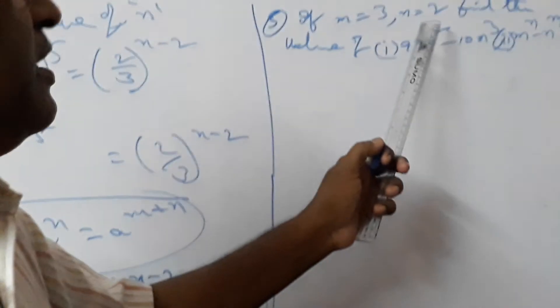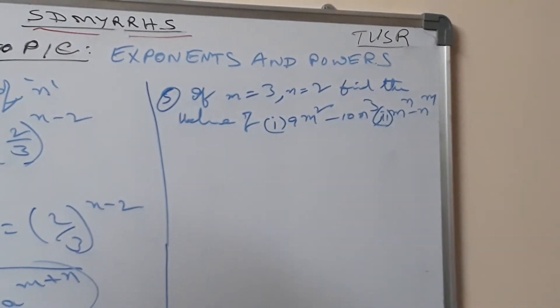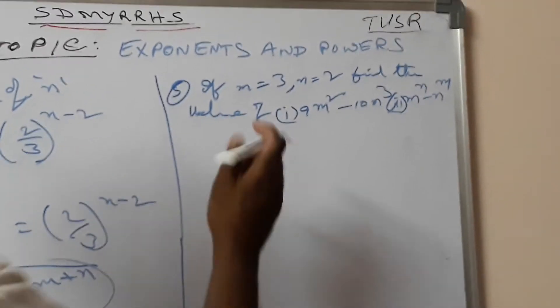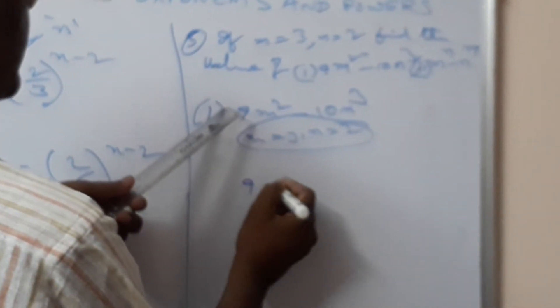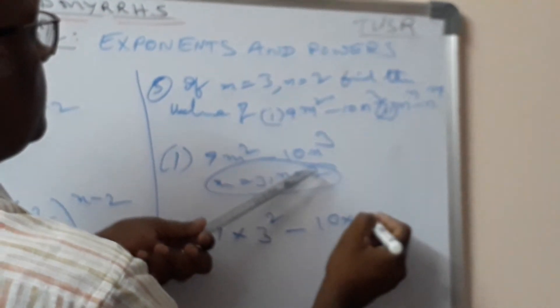Another problem. If m is equal to 3 and n is equal to 2, find the value of 9m squared minus 10n cubed. Substitute the values: 9 into m squared minus 10 into n cubed, where m equals 3 and n equals 2.